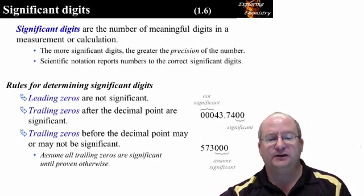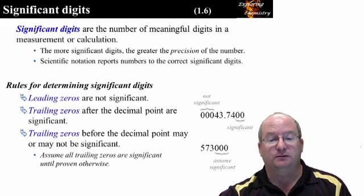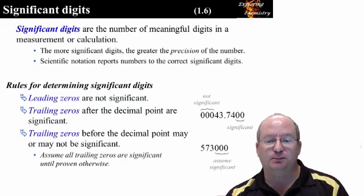But it is trailing zeros before the decimal point that may or may not be significant. There is an ambiguity with trailing zeros before the decimal point. It is best to assume that they are significant until proven otherwise.